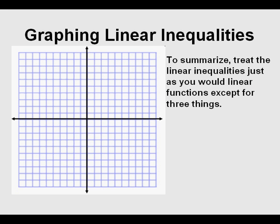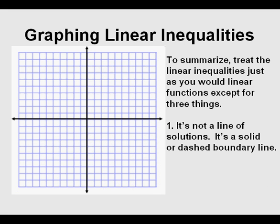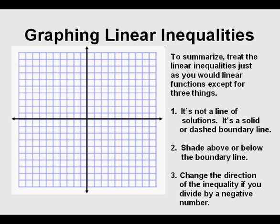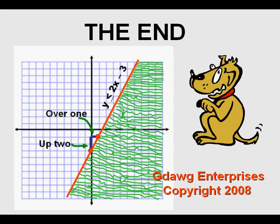To summarize: treat linear inequalities just as you would linear functions, except for three things. First, it's not a line of solutions — it's a solid or dashed boundary line. Second, shade above or below the boundary line. Third, change the direction of the inequality whenever you divide or multiply by a negative number. We hope this has been useful. Thanks for coming.